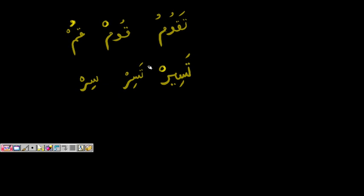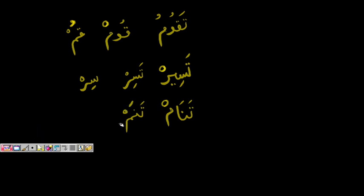For the fi'l al-amr of naqis verbs: for تَلْقَى, drop the ta, left with لْقَى — can't start with sukoon, so add hamza with kasra: إِلْقَ. For تَرْمِي: make majzoom تَرْمِ, drop the ta, add hamza: إِرْمِ. For تَدْعُو: majzoom is تَدْعُ, drop the ta, add hamza with dhamma: اُدْعُ — as in the Quran: اُدْعُ إِلَى سَبِيلِ رَبِّكَ — call to the path of your Lord.